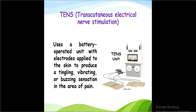The next technique is TENS — Transcutaneous Electrical Nerve Stimulation. It uses a battery-operated unit with electrodes applied to the skin to produce a tingling, vibrating, and buzzing sensation in the area of pain. The electrodes are placed on the site of pain and when the device is switched on, electrical impulses are released, creating tingling and vibrating sensations that relieve pain.